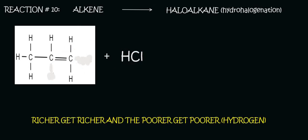So we need to look at which carbon is richest in hydrogen. It would be this carbon over here because it's already got two hydrogens and so the richer are going to get even richer. So this hydrogen is going to attach there and then Cl would attach onto that one. There will come a time when we will use poorer get poorer.